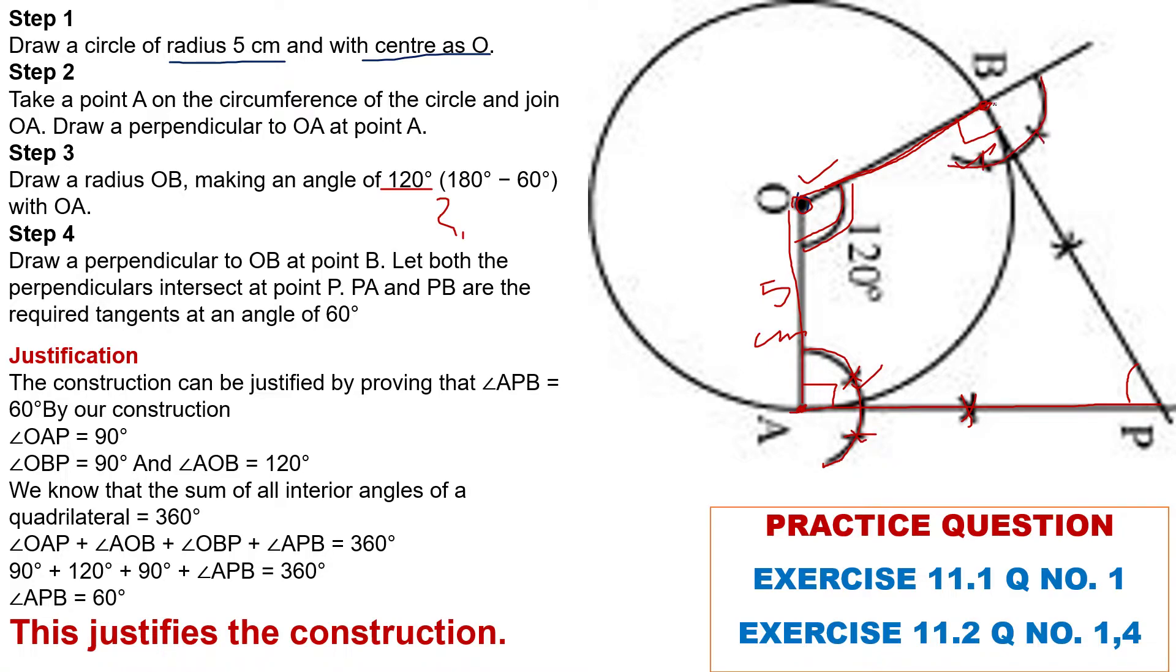And when we join BP and AP, these two tangents are equal from an external point of a circle. Now question arises here: why this angle is 60 degrees? Same concept. This one is 90.